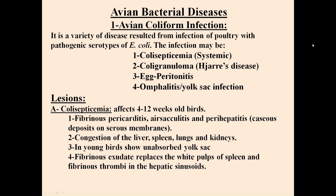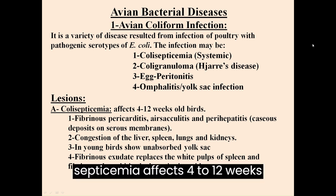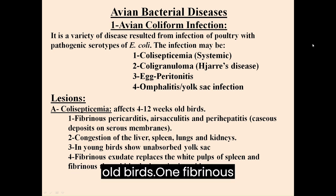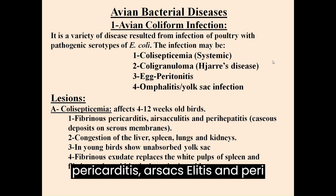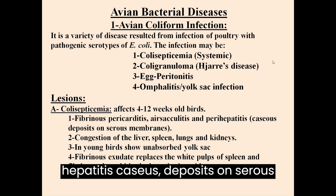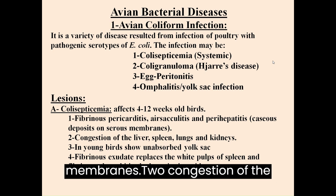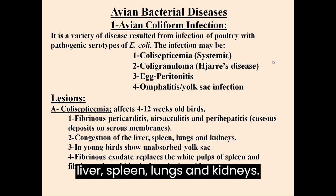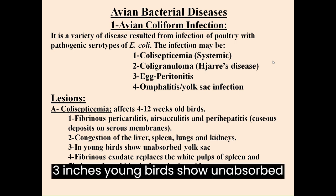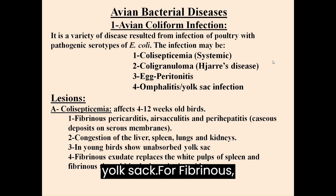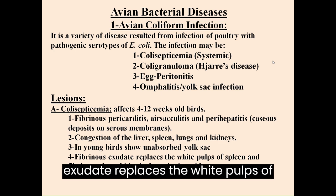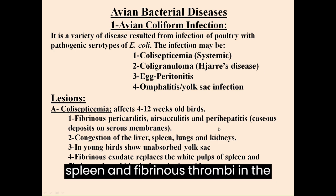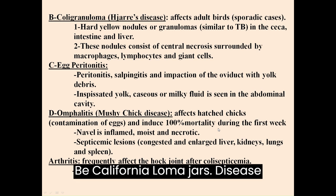Lesions: A. Colosepticaemia affects 4-12 week old birds. 1. Fibrinous pericarditis, airsacculitis and perihepatitis with caseous deposits on serous membranes. 2. Congestion of the liver, spleen, lungs and kidneys. 3. In young birds, unabsorbed yolk sac. 4. Fibrinous exudate replaces the white pulp of spleen and fibrinous thrombi in the hepatic sinusoids.